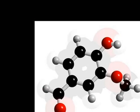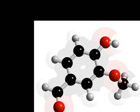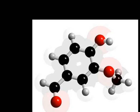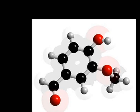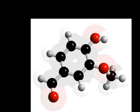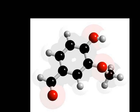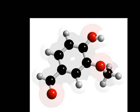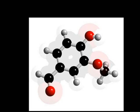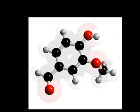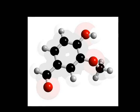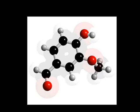This is a ball and stick diagram of vanillin. As you can see, there are numerous carbon double bonds. The red balls represent oxygen atoms, the black balls are carbon atoms, and the white are hydrogen atoms.